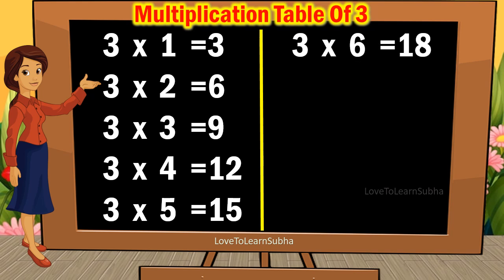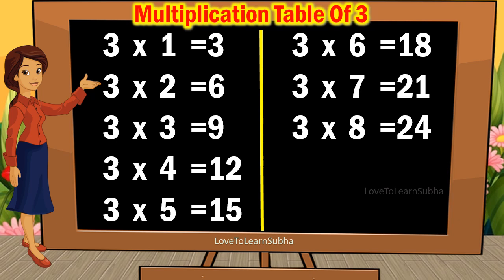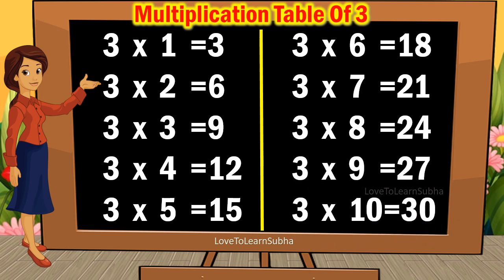3 6s are 18, 3 7s are 21, 3 8s are 24, 3 9s are 27, 3 10s are 30.